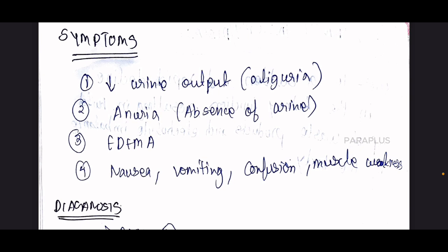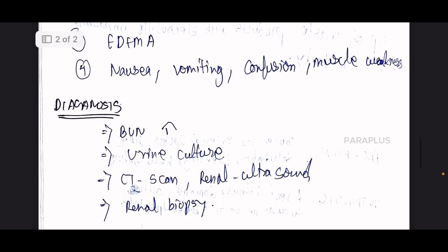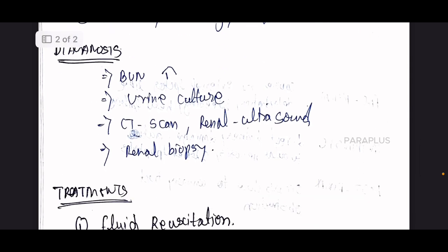Diagnosis involves blood urea nitrogen (BUN) — that level is elevated — along with urine culture test, CT scan, renal ultrasound to check for blockage, and renal biopsy.